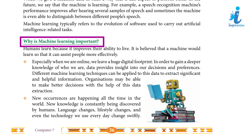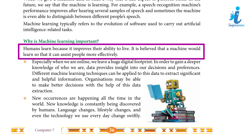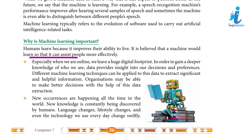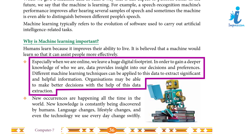Why is machine learning important? Humans learn because it improves their ability to live. It is believed that a machine would learn so that it can assist people more effectively. Especially when we are online, we leave a huge digital footprint. Data provides insight into our decisions and preferences, giving us a deeper knowledge of who we are. Different machine learning techniques can be applied to this data to extract significant and helpful information, helping organizations make better decisions.